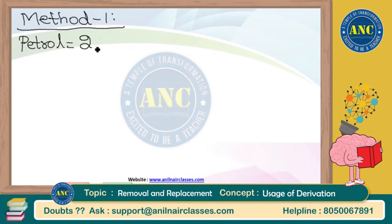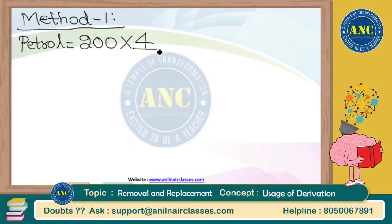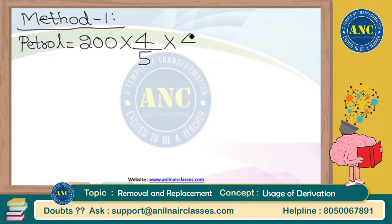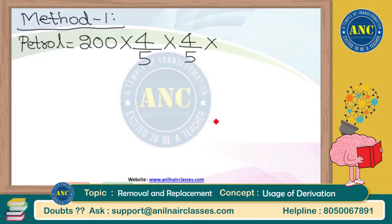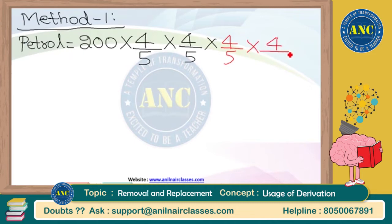I am finding the final volume of petrol. Initial volume of petrol is 200. 40 out of 200 is taken out - that is 1/5 taken out, remaining inside is 4/5. You added 40 kerosene, it became 200 again. Once again 40 out of 200 is taken out, 1/5 is taken out, remaining inside is 4/5. This repeats for four cycles.